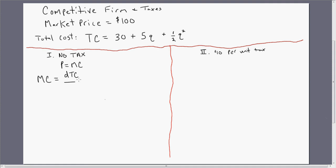We're going to take the derivative of the total cost equation with respect to the competitive firm's output, Q. We're going to get 5 plus Q. Okay, so we bring down to 2 in front here, taking our derivative. 2 times 1 half just becomes 1, and then we're left with Q.